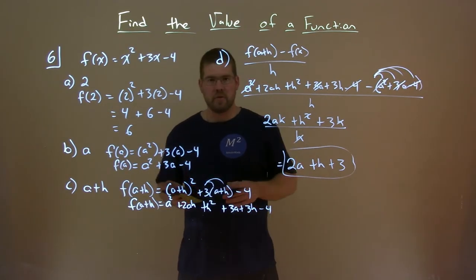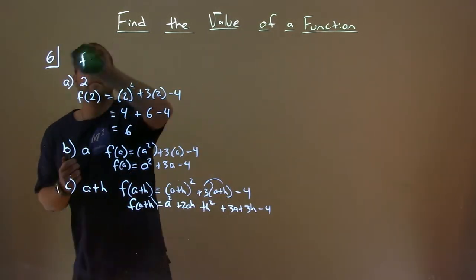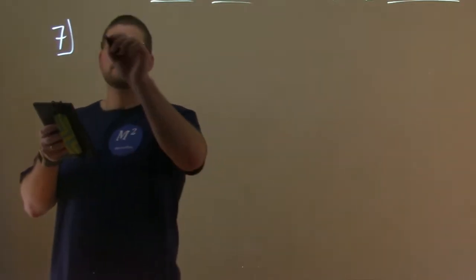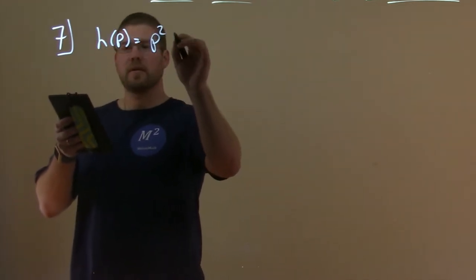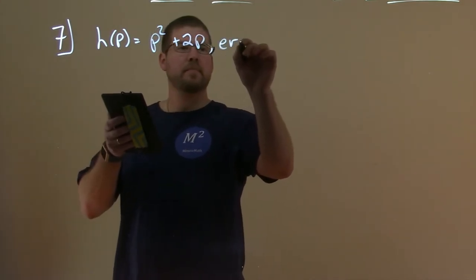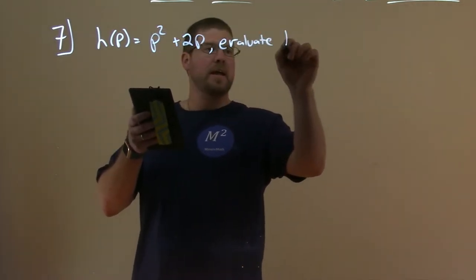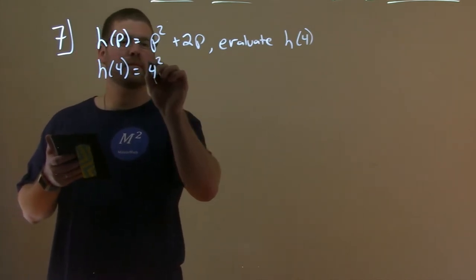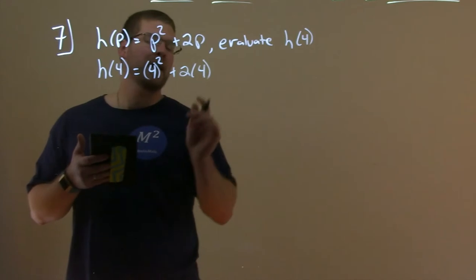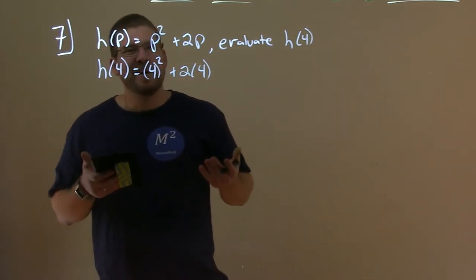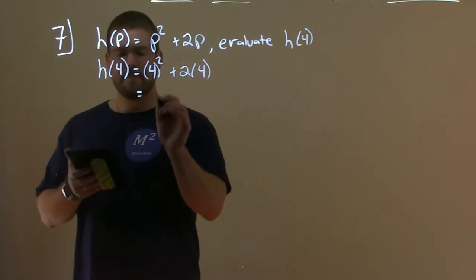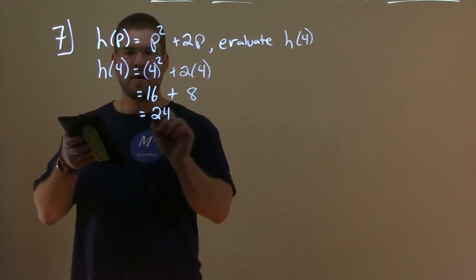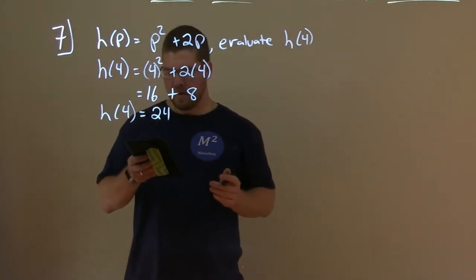I'm going to erase this and dive into another example. Number 7: we're given the function h(p) equals p squared plus 2p, and we want to evaluate that at h(4). We plug 4 in for p. h(4) equals 4 squared plus 2 times 4. I'll put parentheses around items I'm substituting. 4 squared is 16, 2 times 4 is 8, so 16 plus 8 is 24. h(4) equals 24.